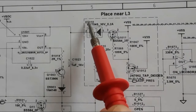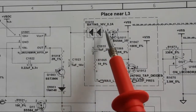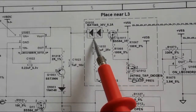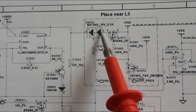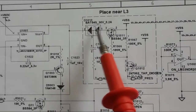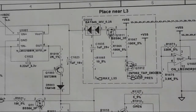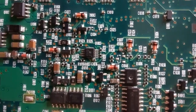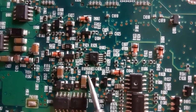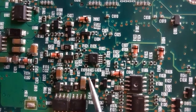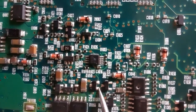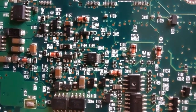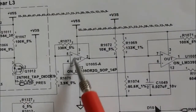Here we have another component — a double diode. This is D1010, a double diode: two diodes connected together. In the motherboard, D1010 shows the first diode connected to the second diode, the same as in the schematic.